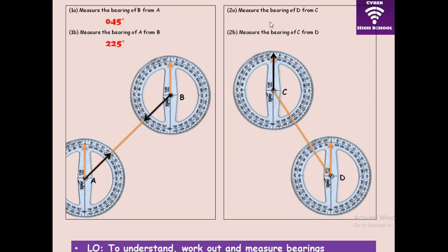Let's look at the second case. Measure the bearing of D from C. We position from C, and the angle we are looking at gives us 145 degrees — it goes all the way up to that mark.